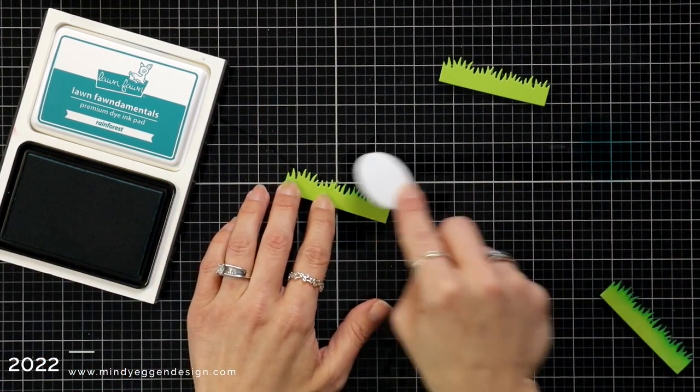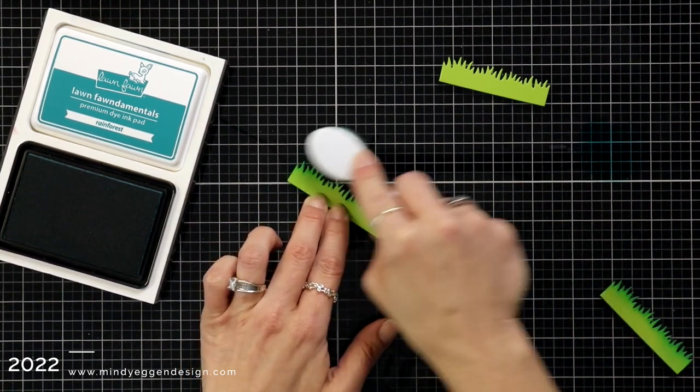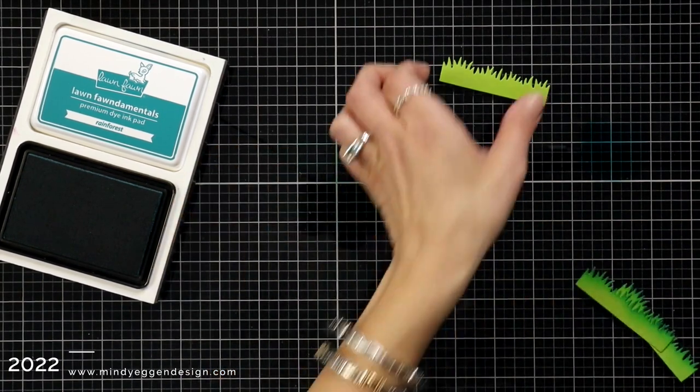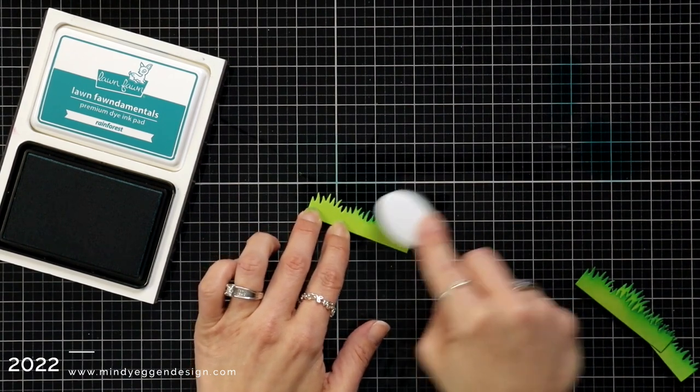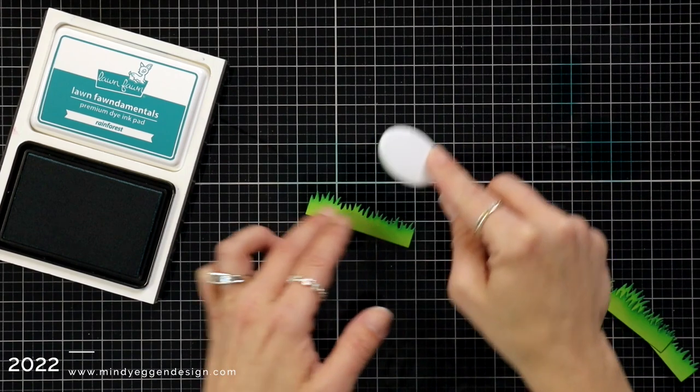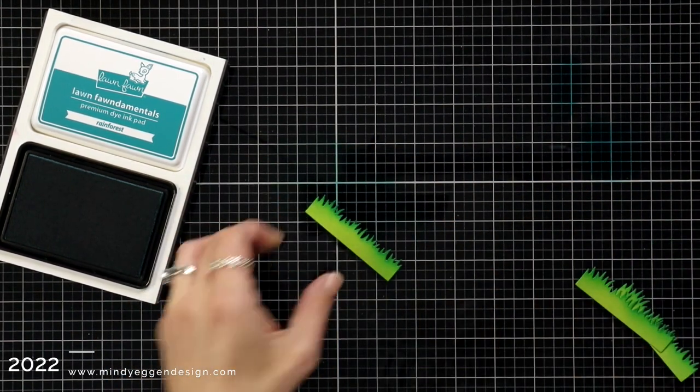I am using the new rainforest ink to just lightly ink blend some color on the top of that grass. I love this rainforest color. I love the cardstock, so I was super excited to see that they have it in an ink pad because it is amazing on cilantro cardstock. I did this for all three of them, and later on I cut an extra one to put on the front of the box, doing a little bit of ink blending of that rainforest ink.